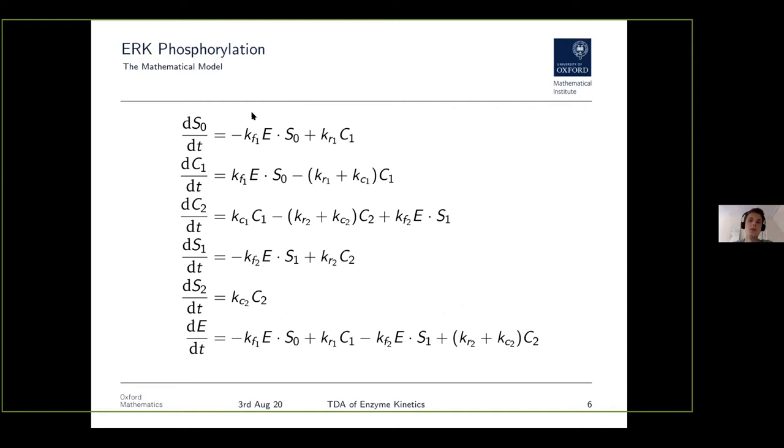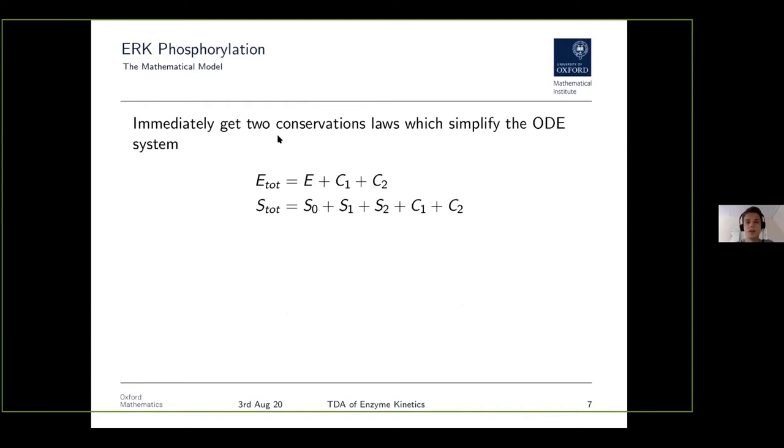By something called the law of mass action, which is mathematically widely accepted and well argued for, we can directly translate this into a system of differential equations in the variables of the substrate and enzyme we saw before together with some reaction rate constants. If we look at this, we immediately get that there are two conservation laws where E_tot and S_tot are two constants which we know because they're determined by the experimental setup, and we can use this to remove two of the variables and simplify the ODE system.